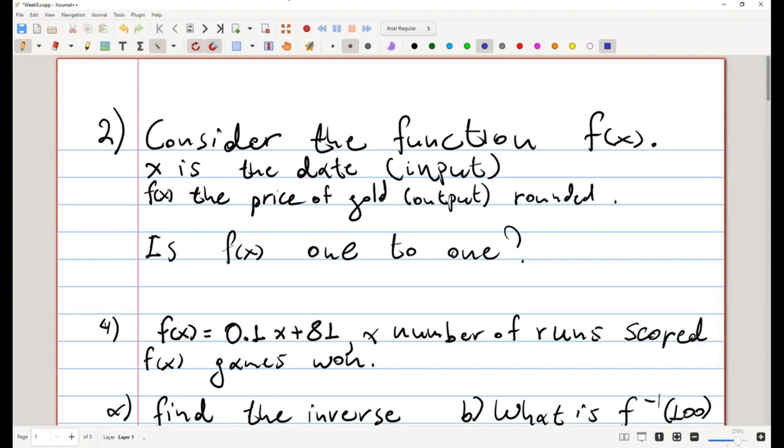We are asked to consider the function f, where x is the date as an input of the function and f, the value that we get back, is the price of gold rounded and it is our output.